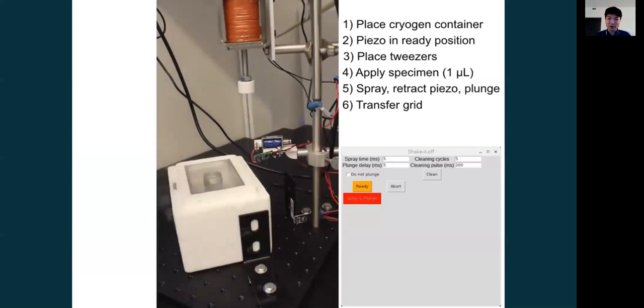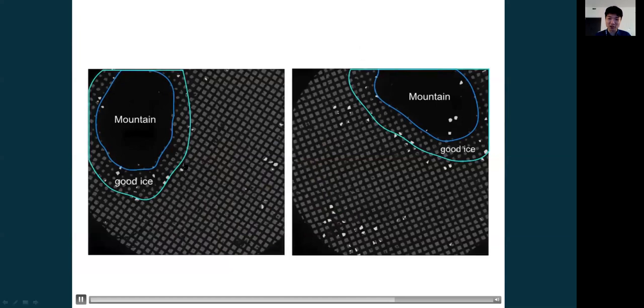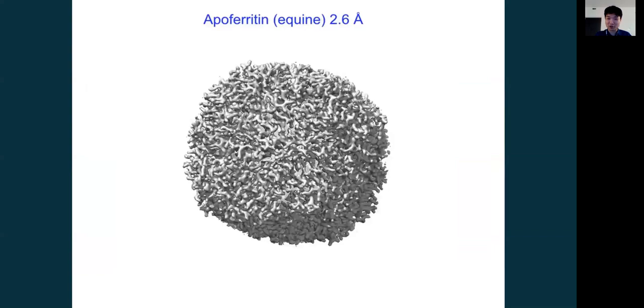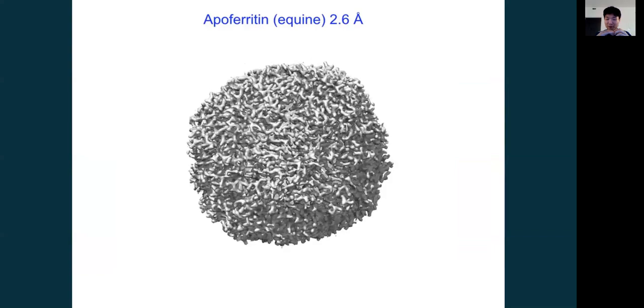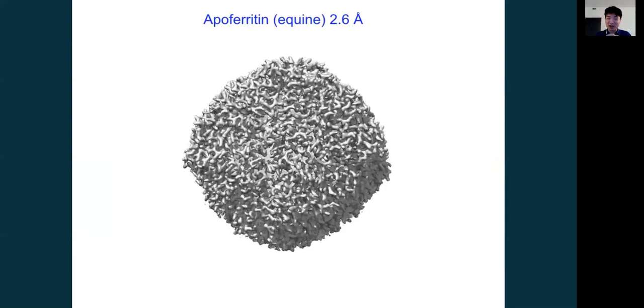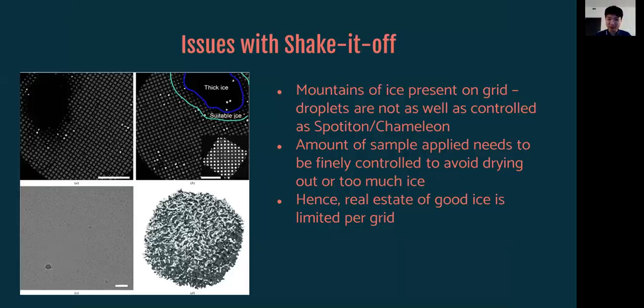So for this first generation Shake It Off device, you can get grids like these. And then you are able to, from these grids, find good ice that produces good samples that produce a 2.6 angstrom apoferritin reconstruction. So the formation of the mist from the piezo itself is not bad for the protein. And you are able to actually produce good reconstructions from it. So that is good to know.